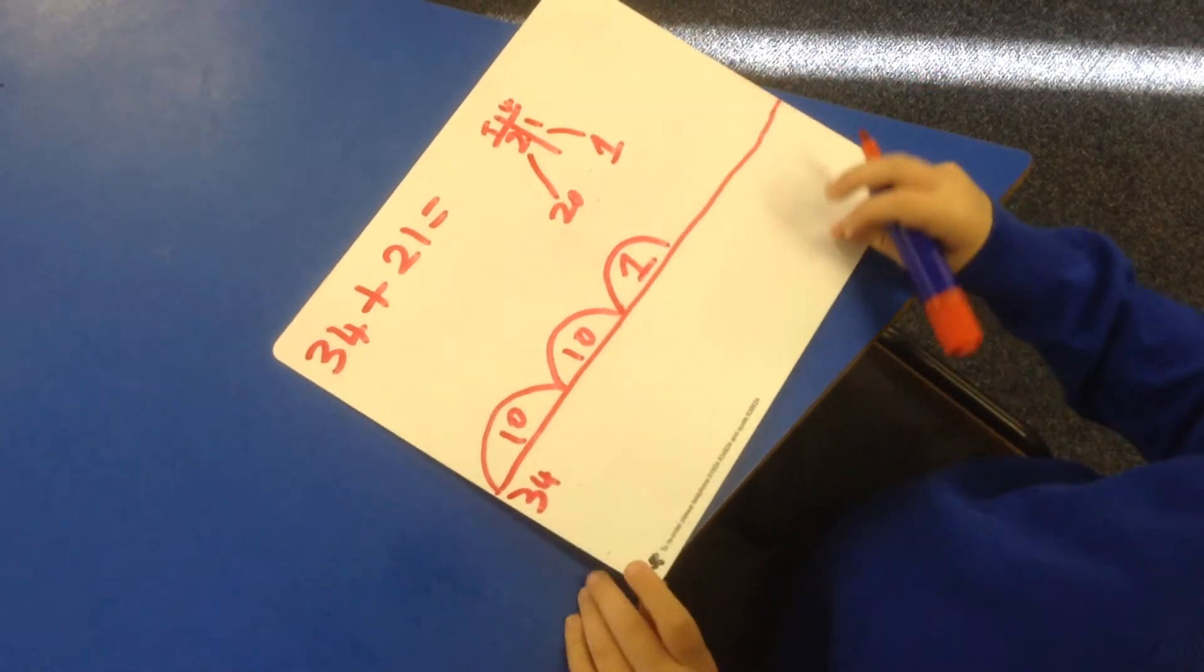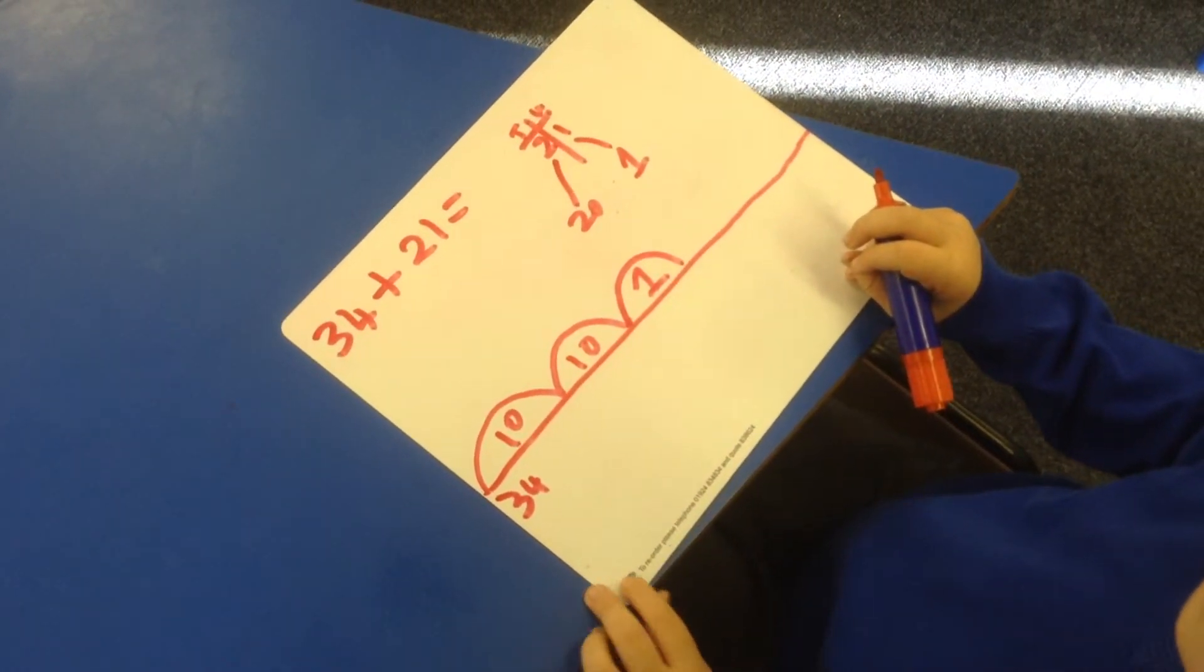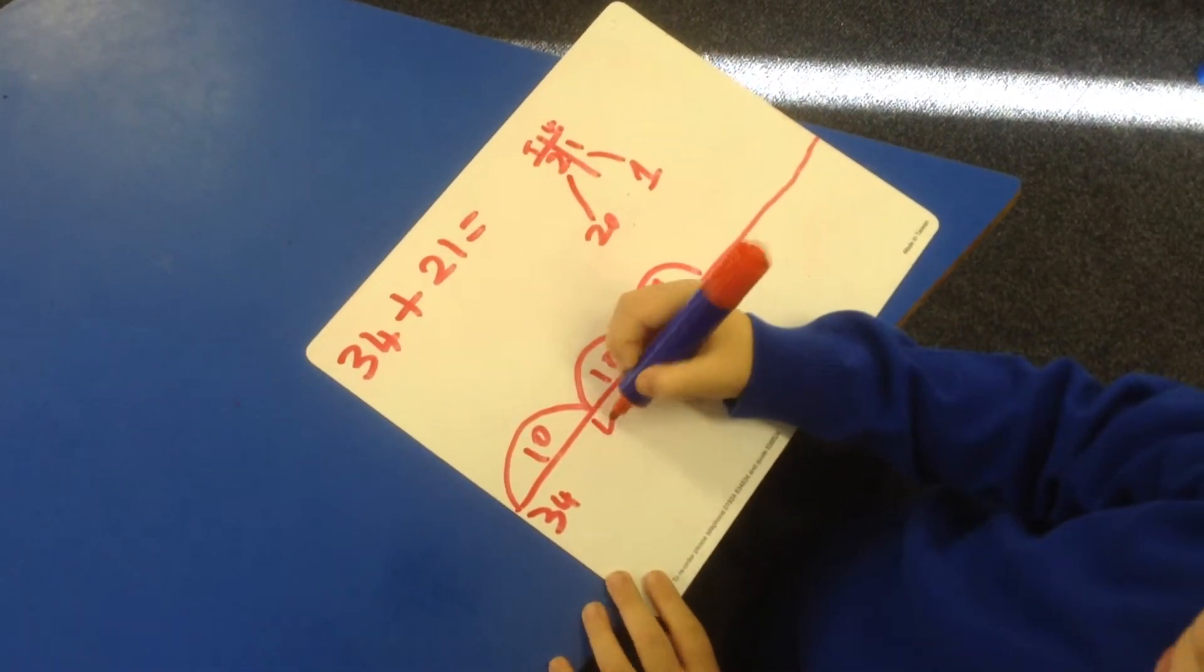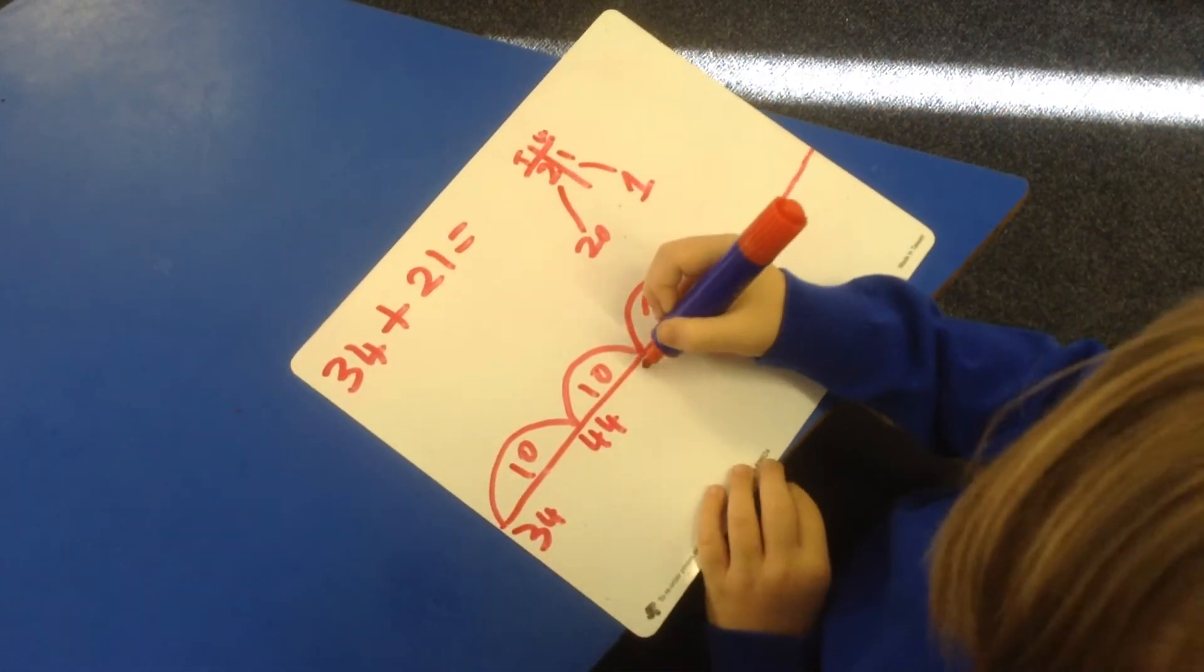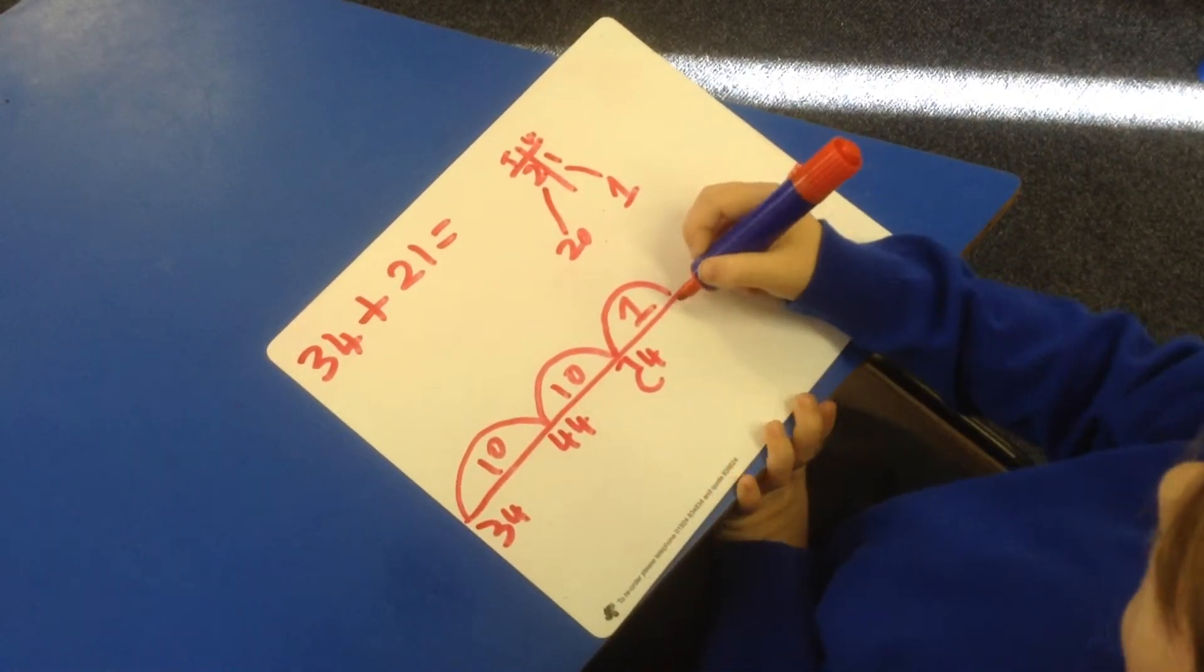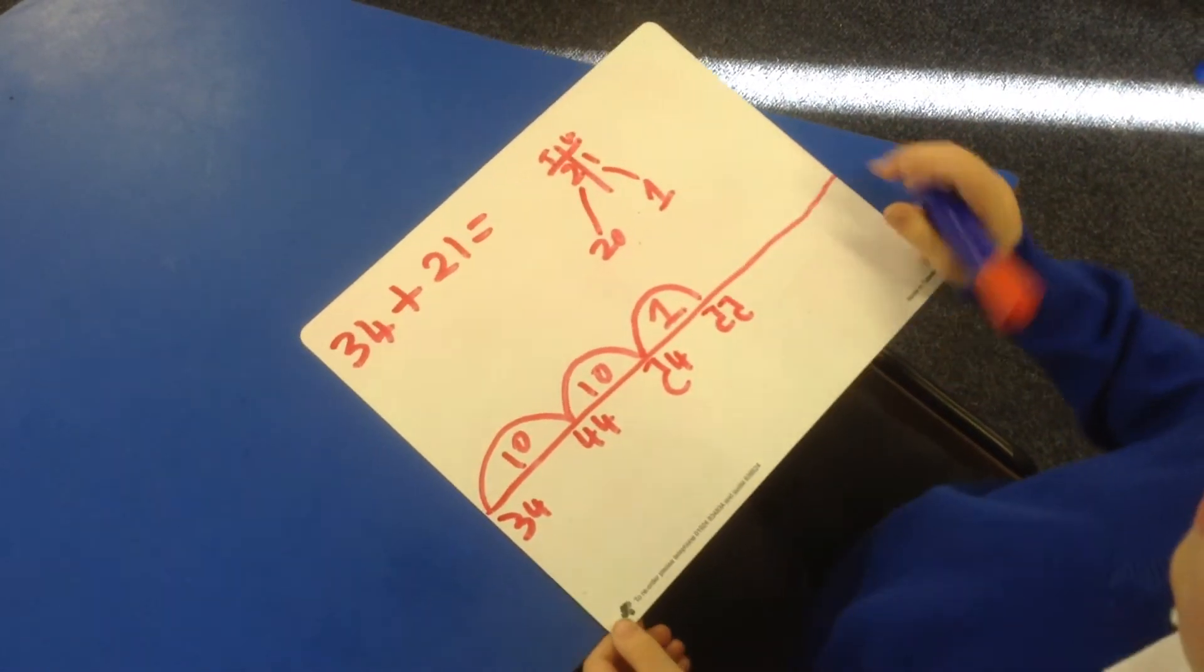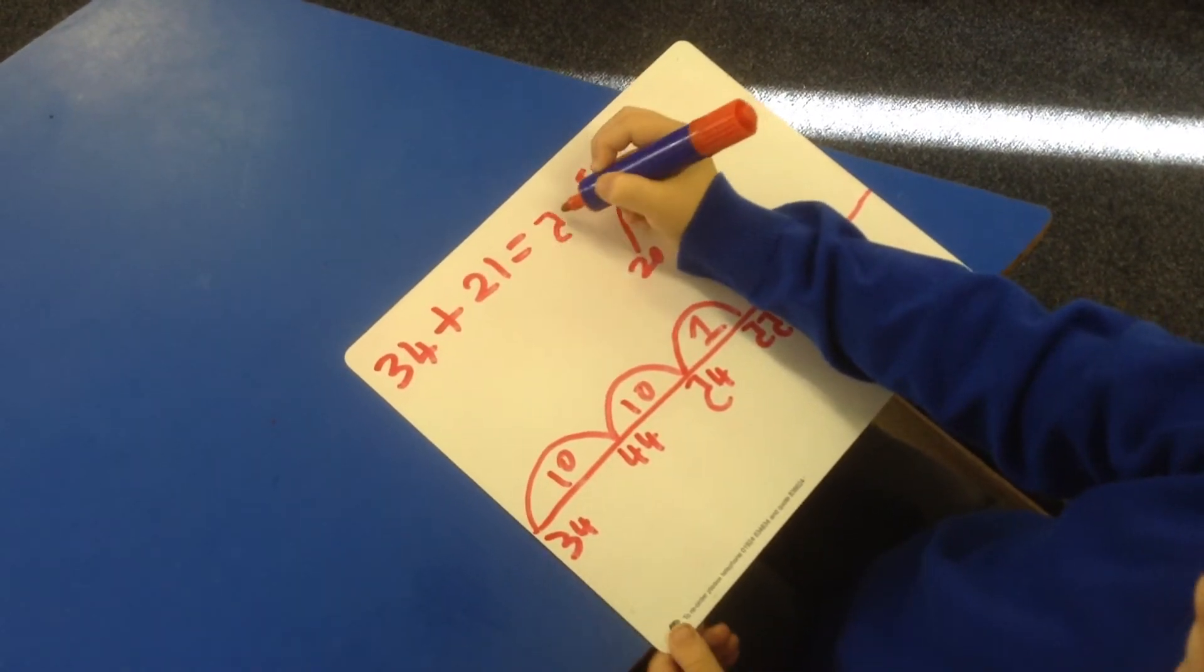Why did you put the jumps of 10 and the jump of 1? Because 10 add 10 makes 20. Then you're going to put a 4 and a 4 to make 44, then you're going to put a 5 and a 4 to make 54, and then you're going to put a 5 and a 5 to make 55. So the answer was 55.